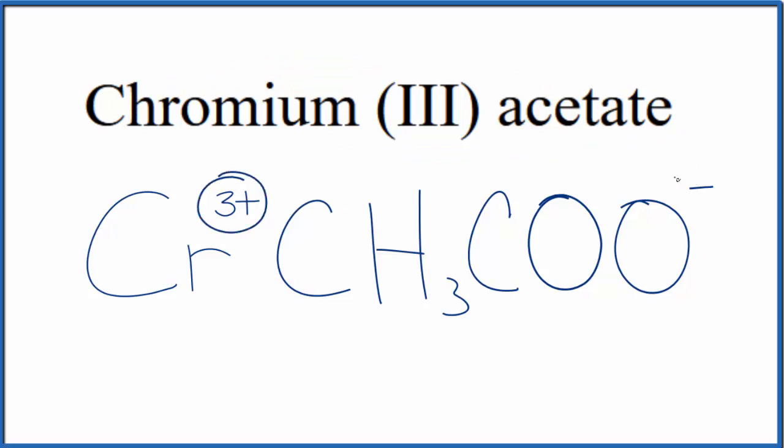We have the 3+, and then we have the 1-. So if we had 3 of these acetate ions here, 3 times 1-, that would give us 3-. That would balance the 3+. So we can put a 3 out here.